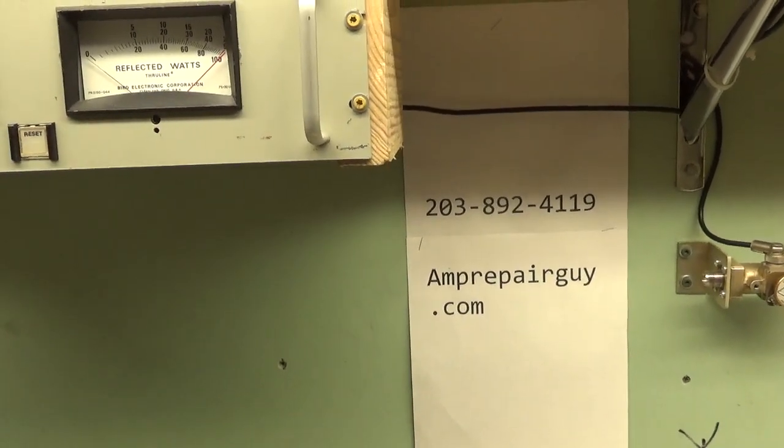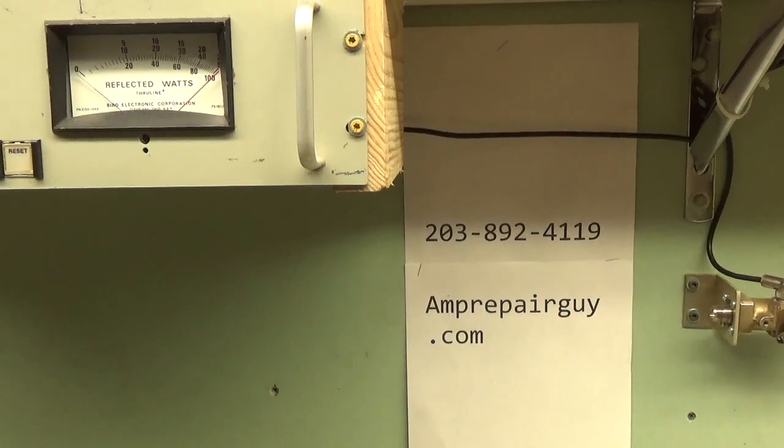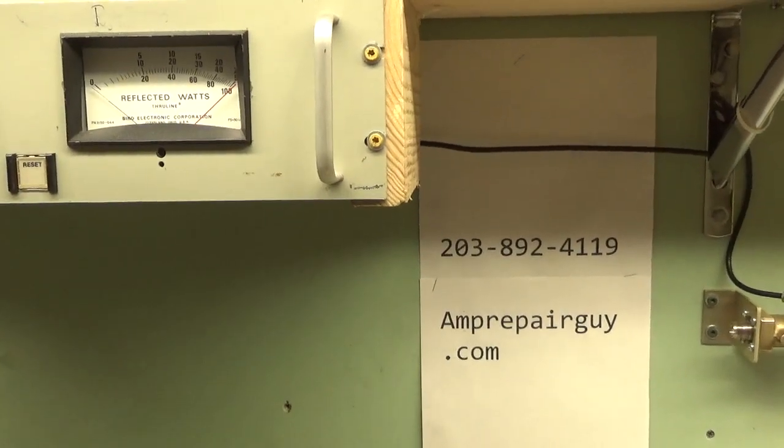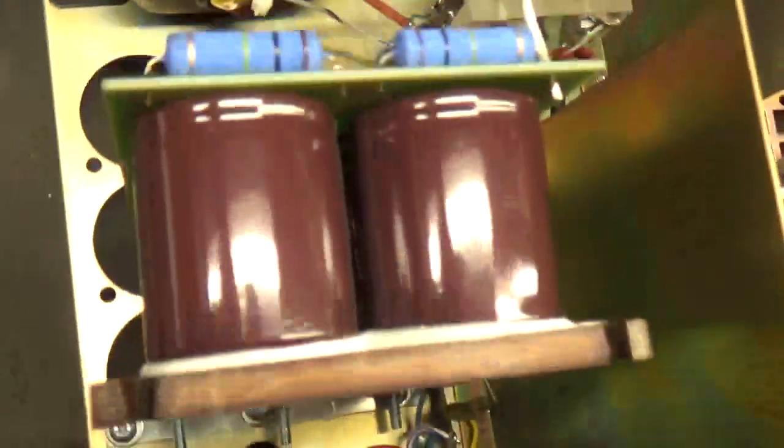We have here a Dentron 160-10L amplifier with four 572 B-tubes in it. It came in with a filter cap that failed, so I replaced the filter caps with the Harbok kit.